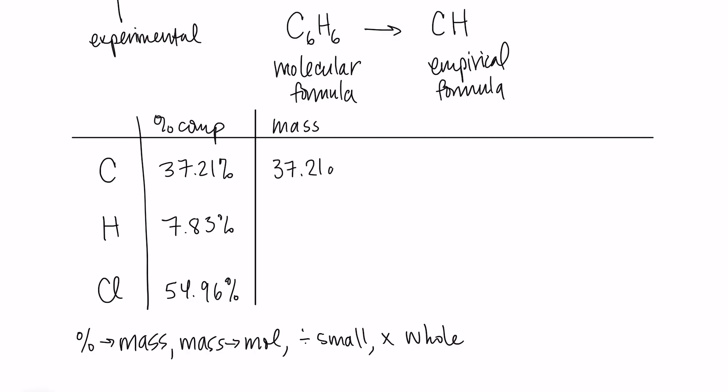So 37.21 grams of carbon, 7.83 grams of hydrogen, 54.96 grams of chlorine. Now, you don't have to assume that you have 100 grams. That just makes it really easy. So it's a nice thing to do if you want to. So that was our first step, which is percent to mass. The second step we're going to take is mass to moles.